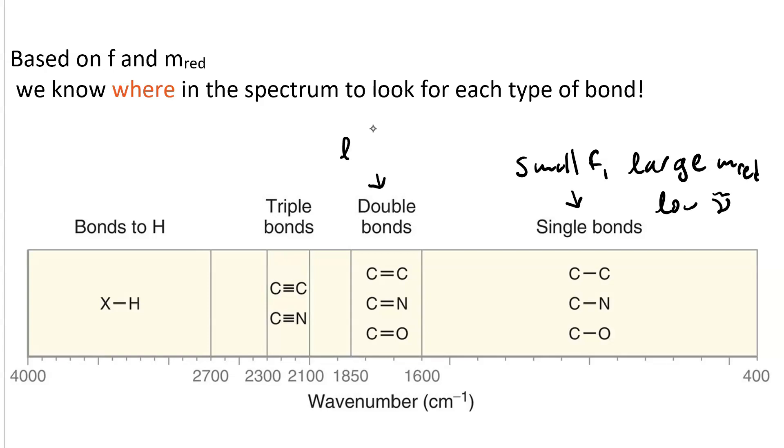Double bonds have a larger F, and the same reduced mass, so you get a larger wavenumber. And triple bonds have the largest F. And again, the same reduced mass, so we see a larger wavenumber. Double bonds will show up between 1600 and 1800. Triple bonds, between 2300 and 2100.